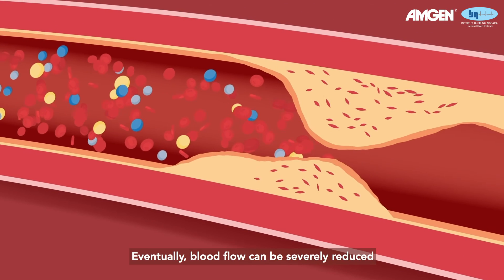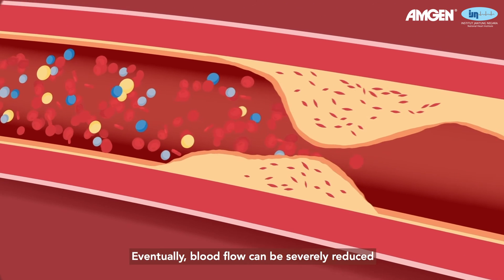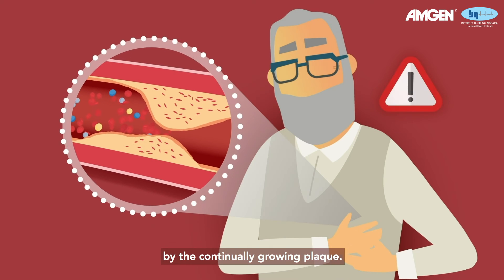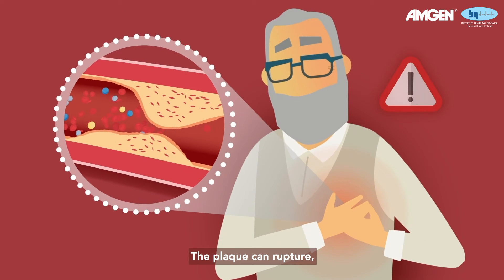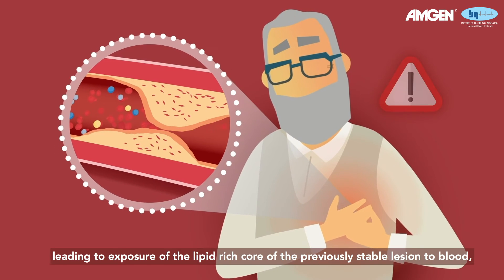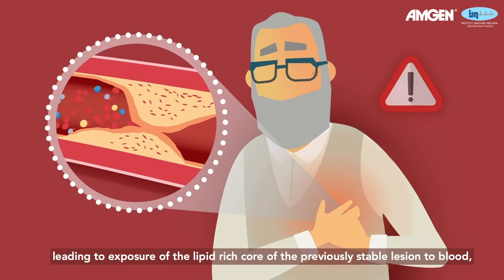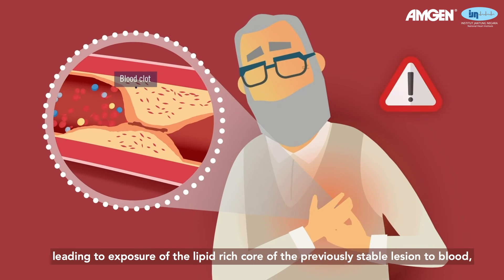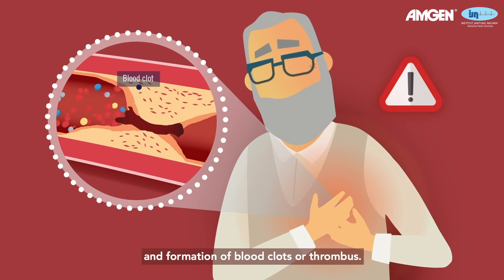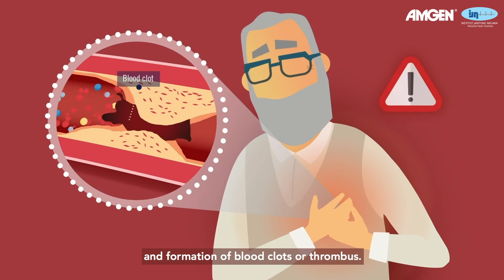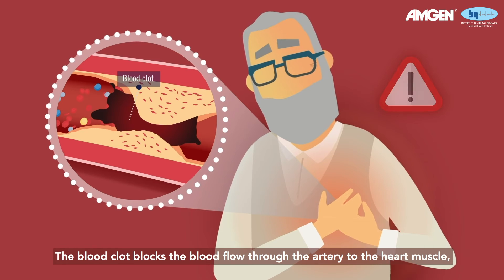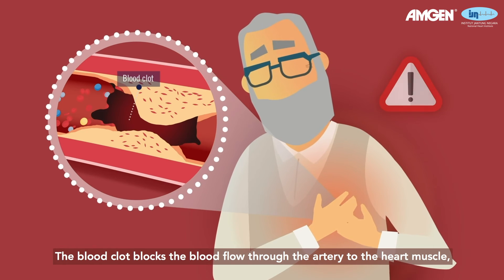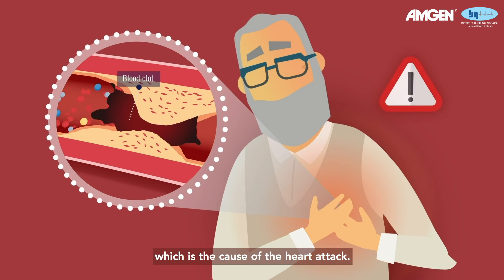Eventually, blood flow can be severely reduced by the continually growing plaque. The plaque can rupture, leading to exposure of the lipid-rich core of the previously stable lesion to blood and formation of blood clots or thrombus. The blood clot blocks the blood flow through the artery to the heart muscle, which is the cause of the heart attack.